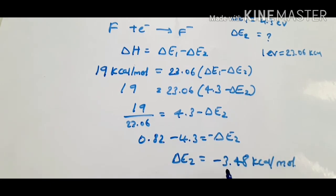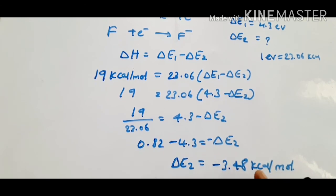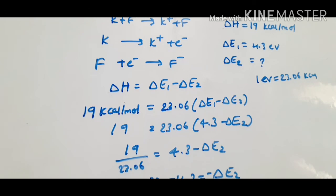The negative sign is because it is electron gain enthalpy — fluorine gains electrons and the process is exothermic. These are the problems based on ionization enthalpy and electron gain enthalpy. Thanks for watching — please subscribe to my channel if you liked it.